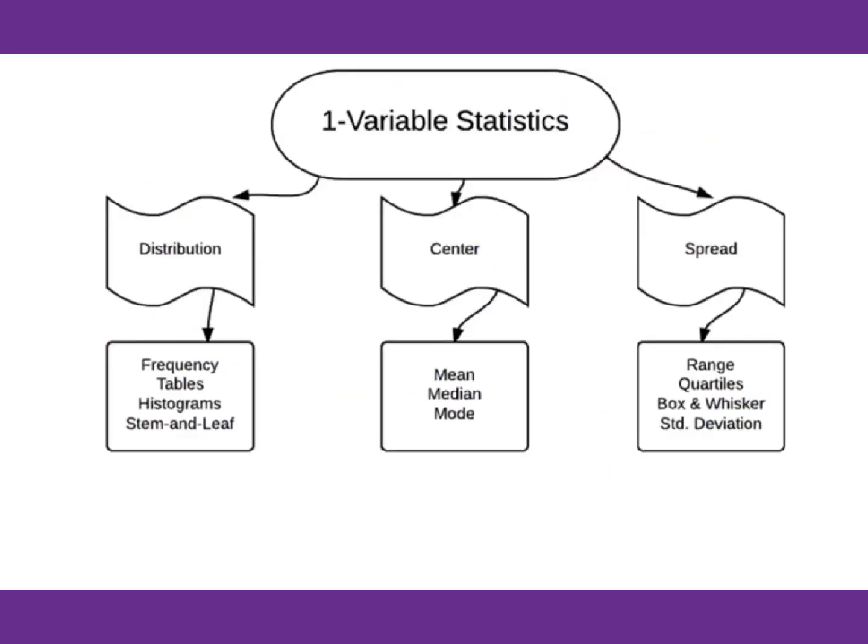For one-variable statistics distribution, we use frequency table, histogram, stem and leaf to show that. For center of the data, we use mean, median, mode. For dispersion, we use range, quartile, box-whisker plot, and standard deviation.